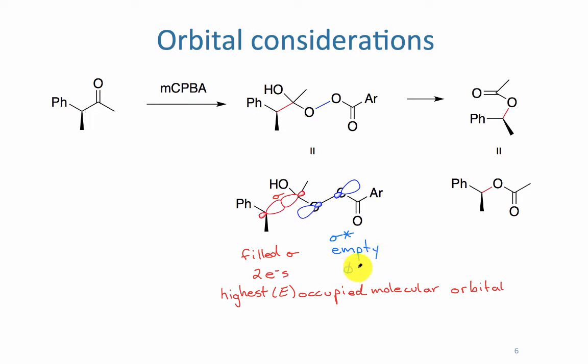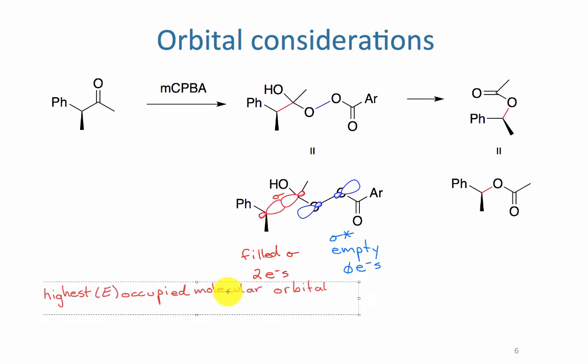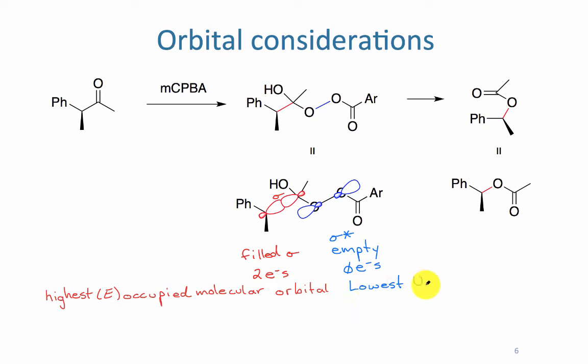What we need over on the right-hand side, that breaking oxygen-oxygen bond, is the sigma star of the oxygen-oxygen. The sigma star is empty. There are currently zero electrons in it, and it is the lowest unoccupied molecular orbital. It's the one that can react most easily.